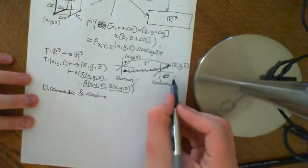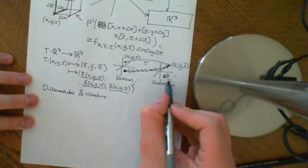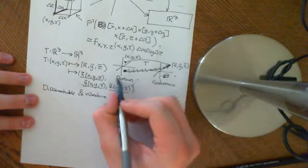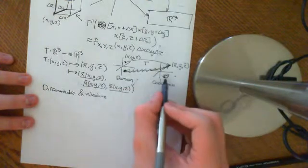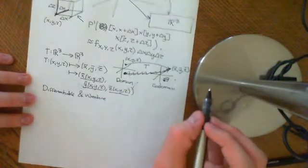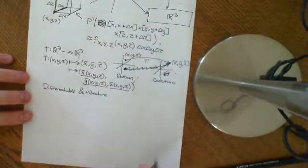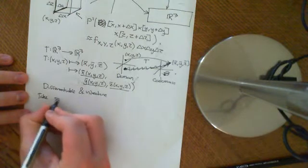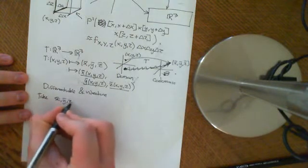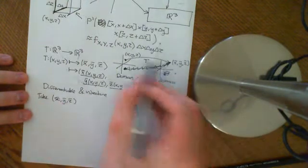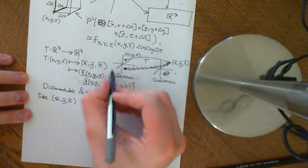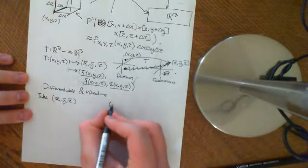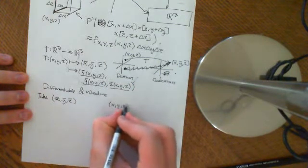First thing to note is that if you have a point in the codomain which has no associated point in the domain — i.e., no point in the domain is mapped onto it — then we'll just define the PDF there to be 0. That's pretty intuitive. Now let's take a point: x̄, ȳ, z̄, which does have a point in the domain mapped onto it. So its inverse image, let's say, is x, y, and z.